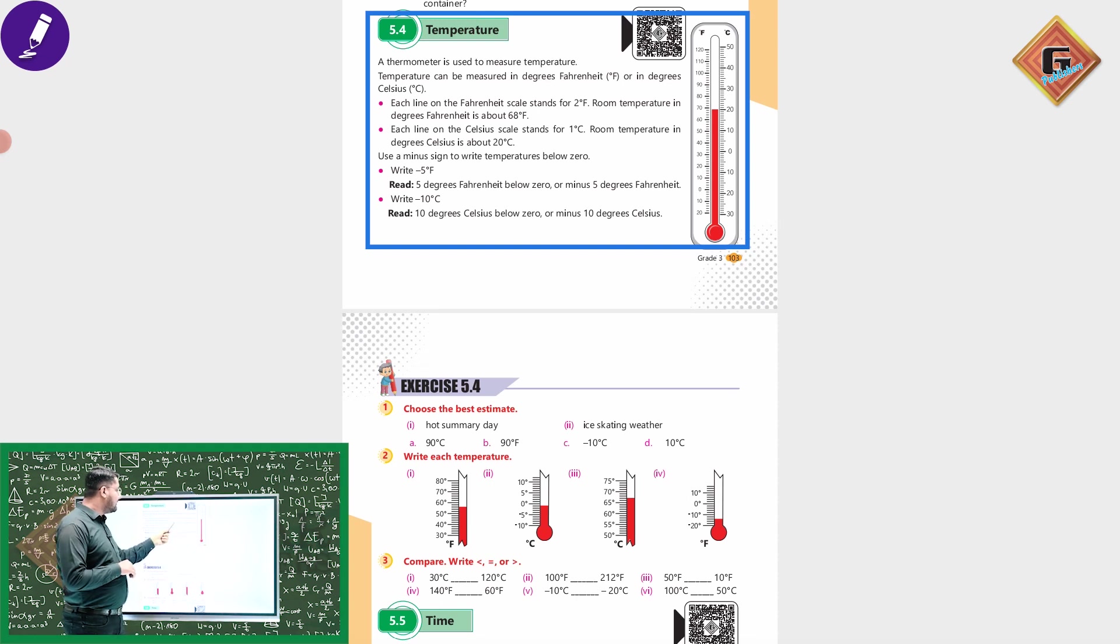In the degree Celsius, room temperature is about 20. If we look at the temperature of 20 degrees Celsius, we use a minus sign to write temperature below zero to represent negative temperatures.